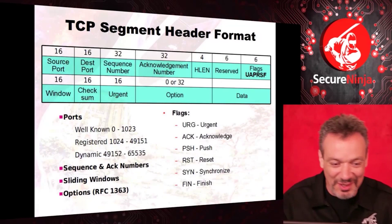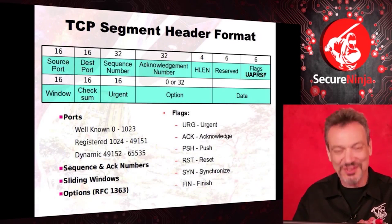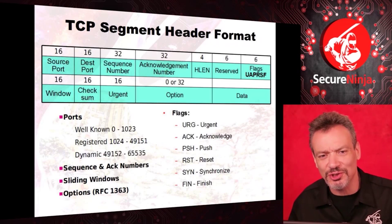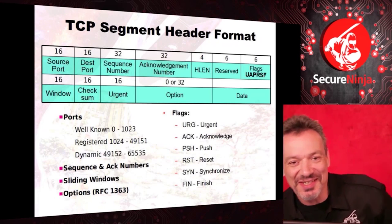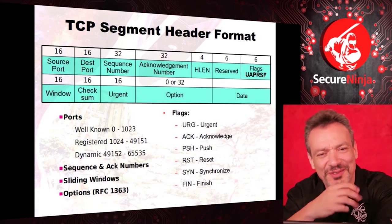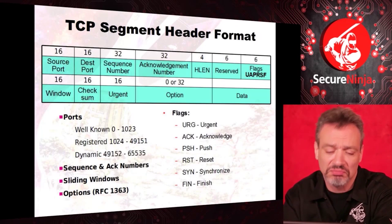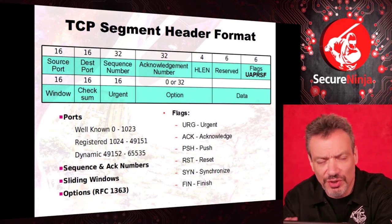Bruce Schneier was asked about the difference between security engineering and safety engineering. He said: safety engineering deals with Murphy's law — if something could go wrong, eventually it will. But security engineering deals with Satan's law — if something could go wrong, there's a malicious person out there who's going to make it go wrong. So you look at these things and ask: why would somebody do that? Because that's how some people think.